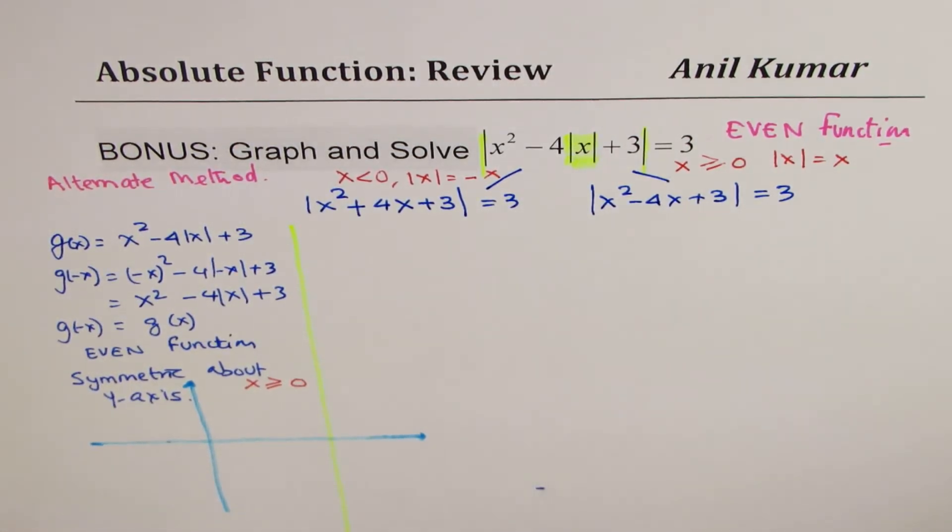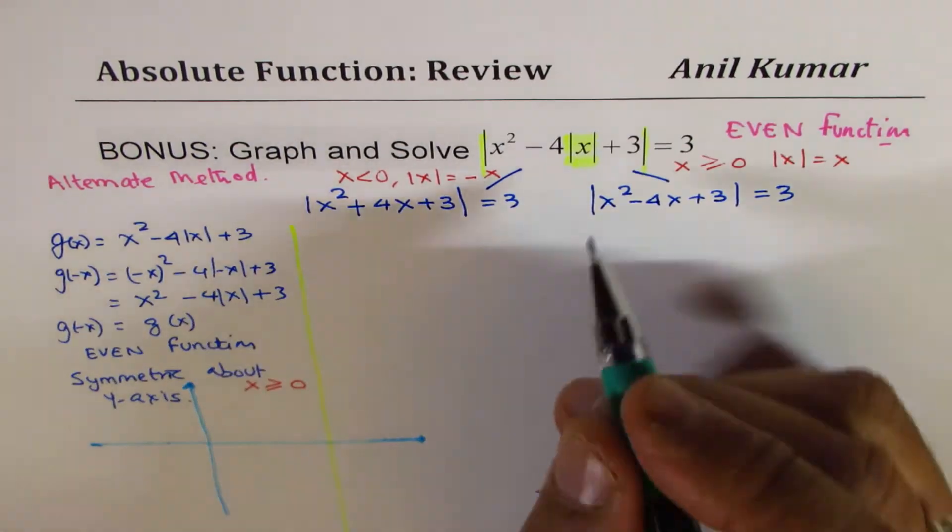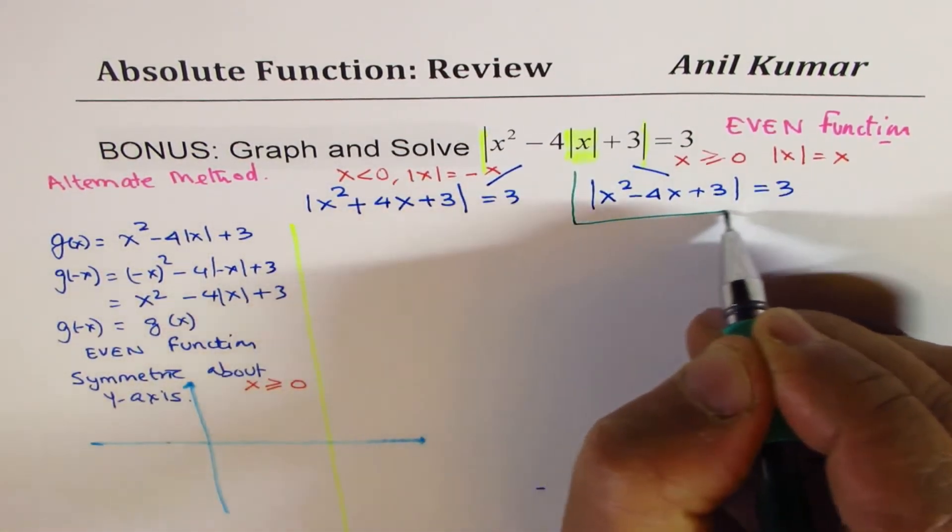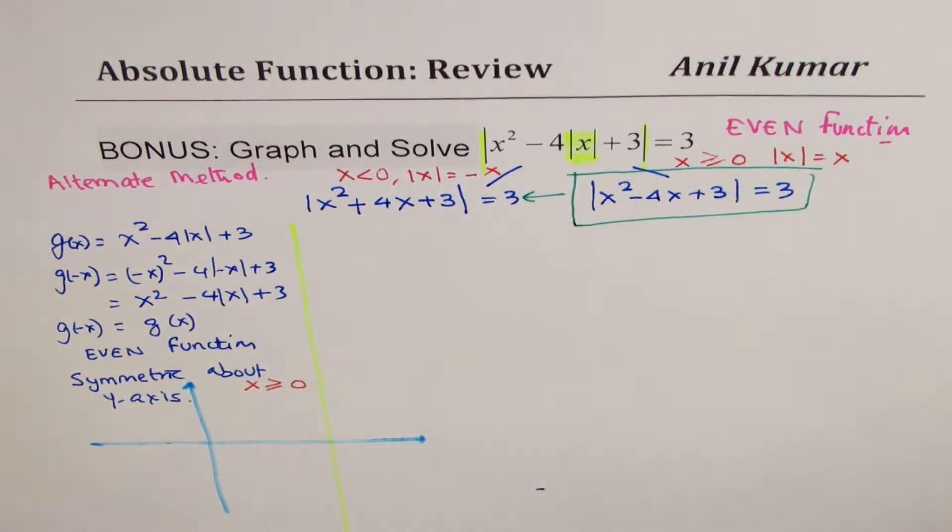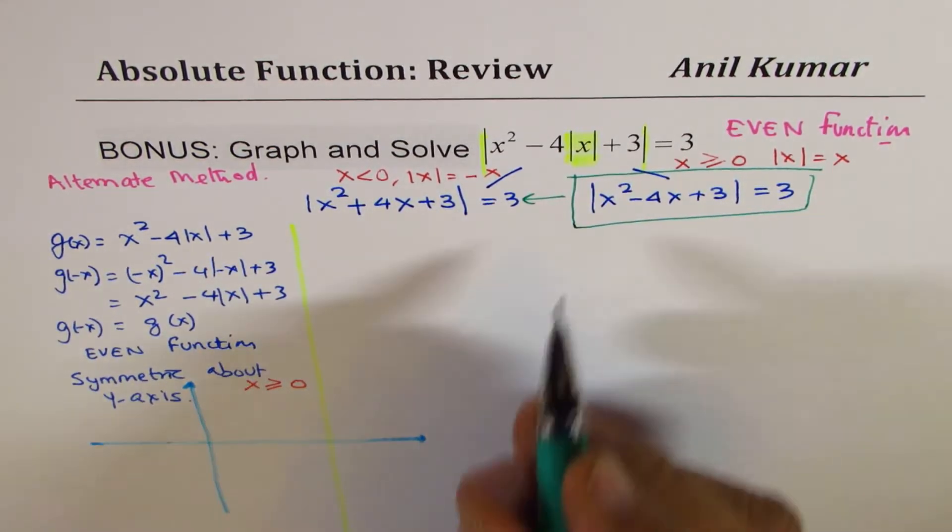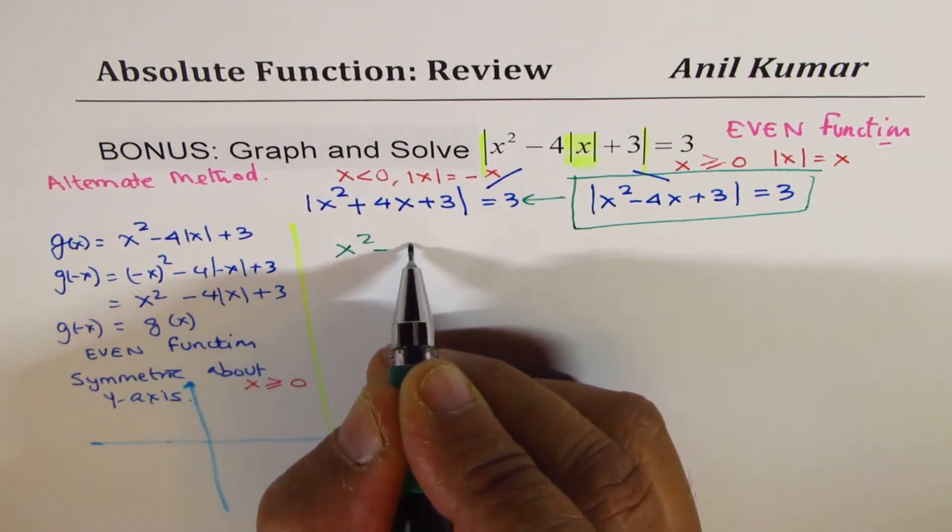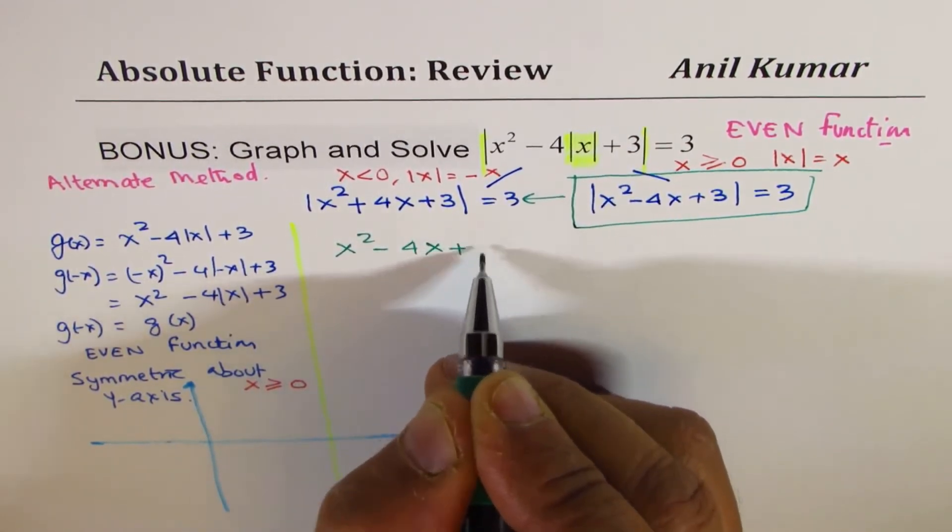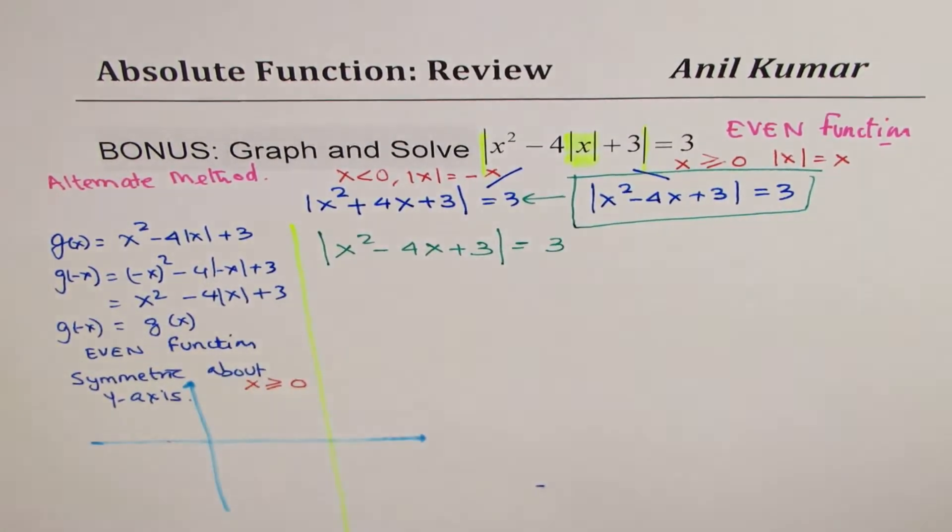So, let's at least do half the work now. So, we'll solve this particular equation. Let me highlight this equation. We'll solve this equation. And from here, we'll get solution from the other equation. So, we're going to solve the equation x squared minus 4x plus 3 absolute value is equal to plus 3.